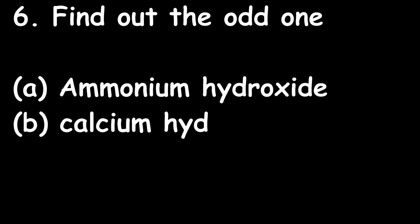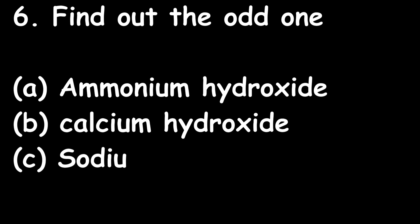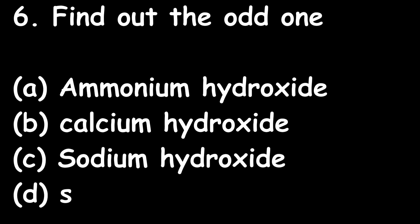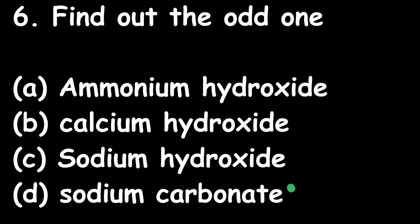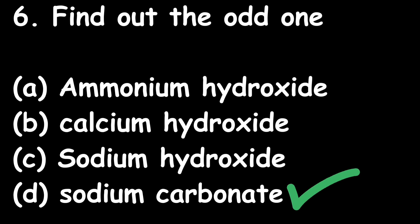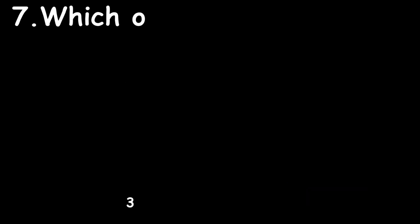Question 6: Find the odd one out. Option A: ammonium hydroxide; Option B: calcium hydroxide; Option C: sodium hydroxide; Option D: sodium carbonate. The right answer is Option D — sodium carbonate. It is a primary standard chemical, whereas the others are secondary standard chemicals.